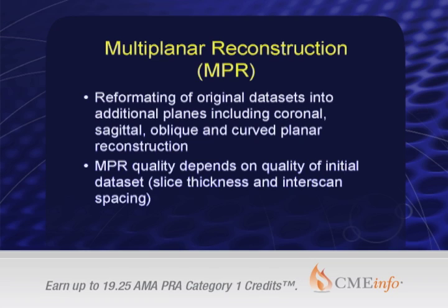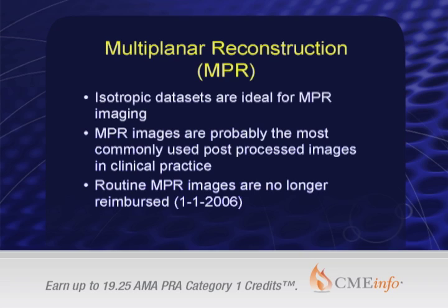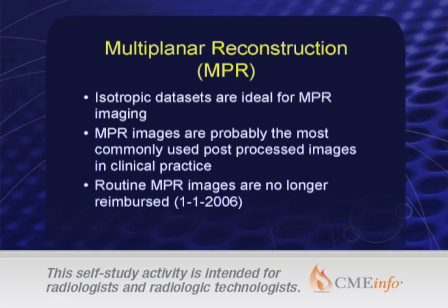But multi-planar is something — particularly once CT went to 64-slice and isotropic data sets — that is now clearly mainstream. Isotropic data sets are obviously ideal, giving the same quality reconstructions whether you're looking at axial, coronal, or sagittal. In the old days we used to get reimbursed for it; now it's all part of the code, so doing multi-planar isn't going to get you any more money.